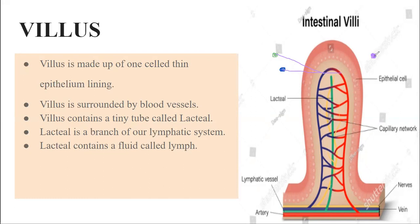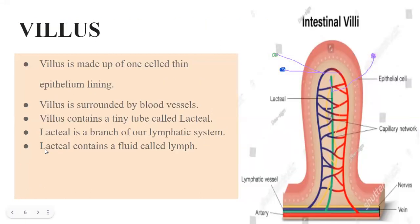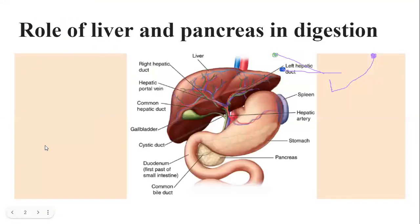The fatty acids will circulate in our lymphatic system and then finally be released into the blood. But initially they circulate in the lymphatic system. The molecules of glucose and amino acids, from our intestine and ileum, will travel by a blood vessel directly from the intestine to the liver.